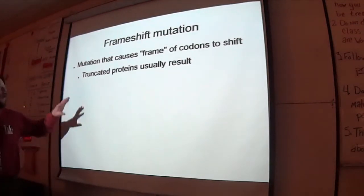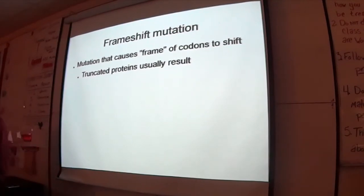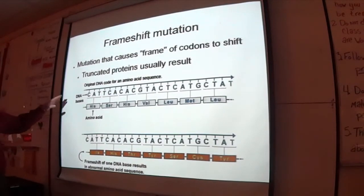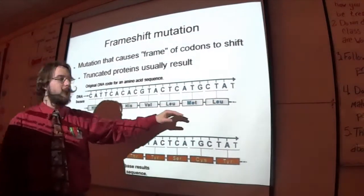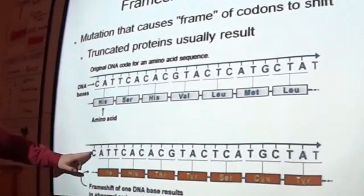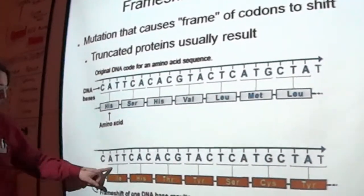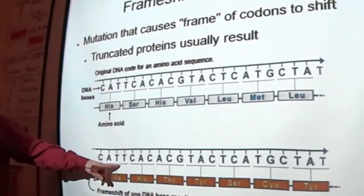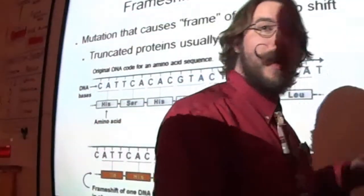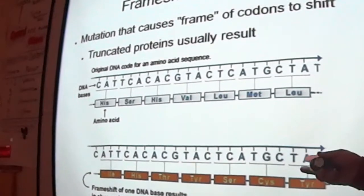Usually the result of a frame-shift is truncated proteins. A lot of times when you have a frame-shift, you'll get a premature stop, or you'll just get a weird protein that doesn't fold up right. Here's an actual example from real DNA. After transcription and translation, the normal strand gives you one series of amino acids. But if you shift the reading frame over just one nucleotide, you get a completely different strand of amino acids, making a completely different protein. It's different — not saying it's good or bad, but we can all agree it's different.